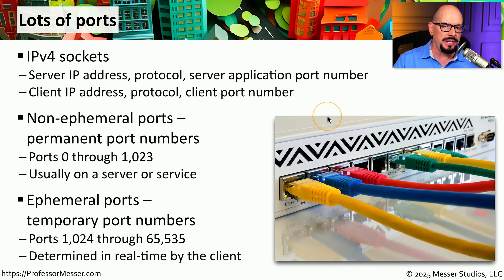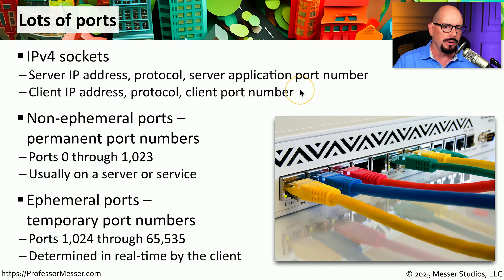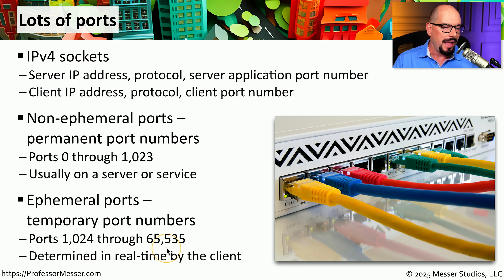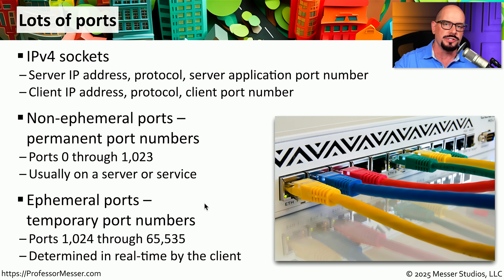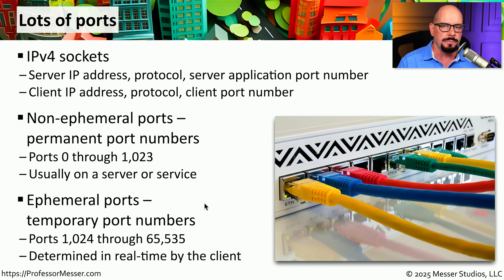To communicate to a service, our client needs not only an IP address and TCP or UDP protocol, but also a client port number. Client port numbers can be any number, usually between 1,024 and 65,535. Because these are used only temporarily, we refer to them as ephemeral ports — used for a single communication. Once that communication is over, we close the connection and don't use that port number any longer. If we communicate to that server again, we choose a new random port number.